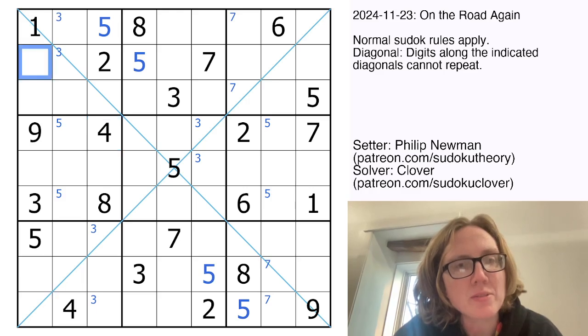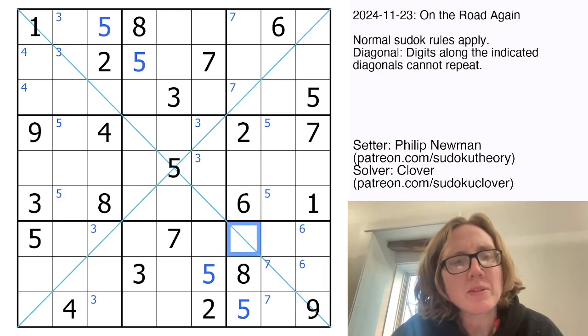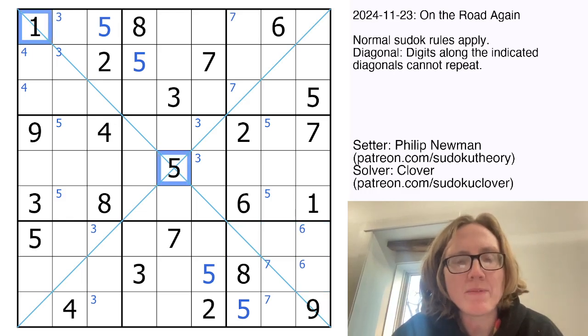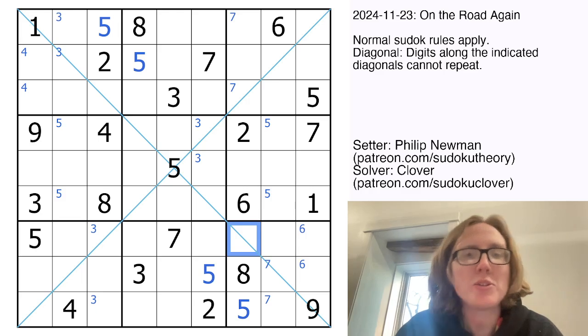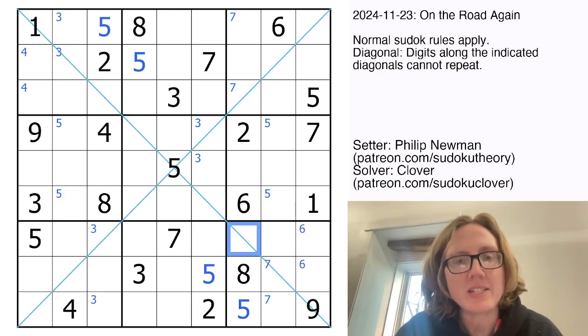So I have 4s here and here, so there's 4 in one of those cells. And I have 6s here and here, so there's a 6 in one of those cells. And I wonder, actually, I think I can do something with these diagonals now. So I've used 1, 5, and 9, so I still need 2, 3, 4, 6, 7, and 8. And I've used a lot of those already here, so I have 6, 7, and 8 looking at this cell in particular. And I also have a 2 here, so this has to be either 3 or 4.